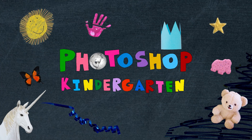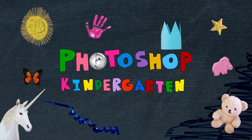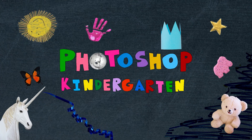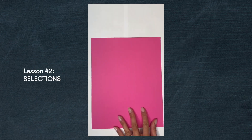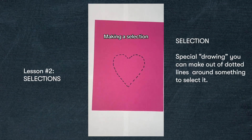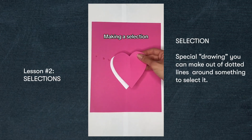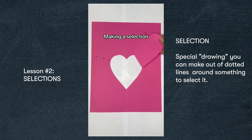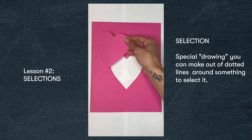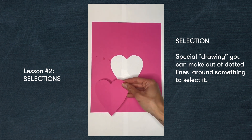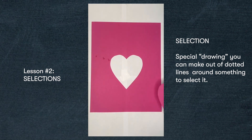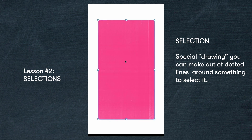Welcome to Photoshop Kindergarten, a series where I explain Photoshop to you as if you were five. Today I'm going to break down what a selection is in Photoshop. A selection is a special drawing you can do that's made out of dotted lines, and then you can take and move around — kind of like using scissors on construction paper. Let's do the same thing in Photoshop.